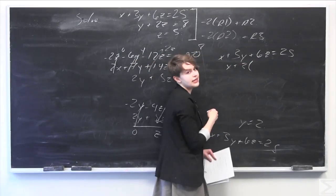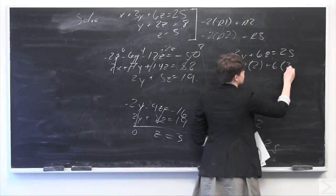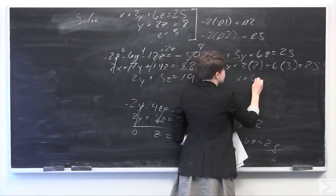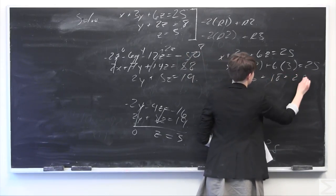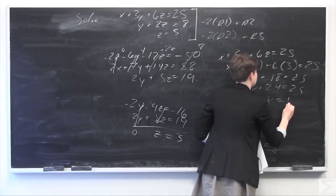We know z equals 3, so plugging in these values: x plus 3 times 2 plus 6 times 3 equals 25. That's x plus 6 plus 18 equals 25, so x plus 24 equals 25, which gives us x equals 1.